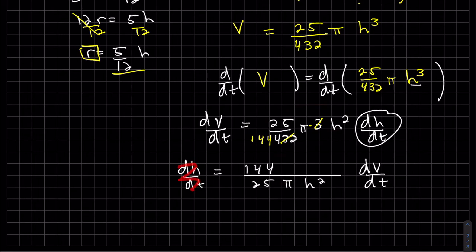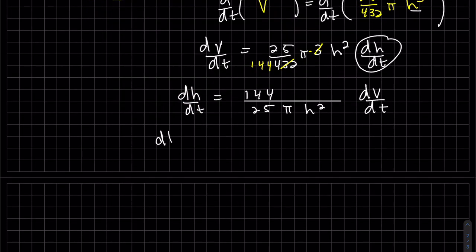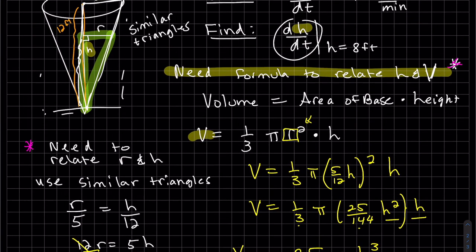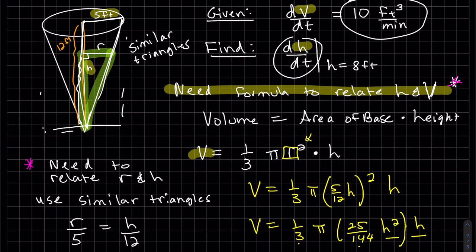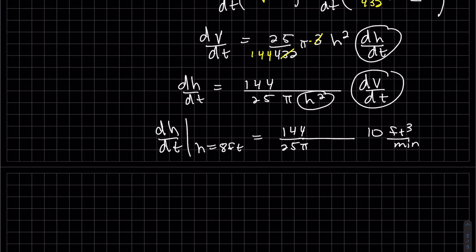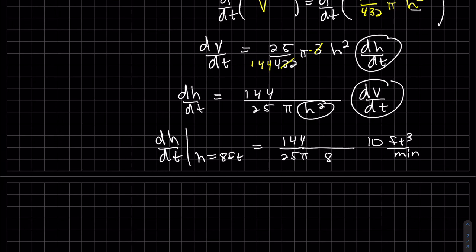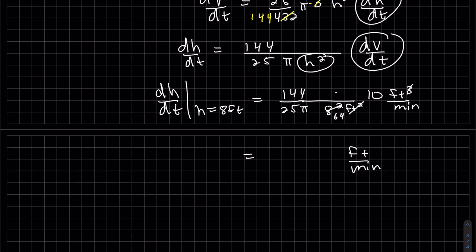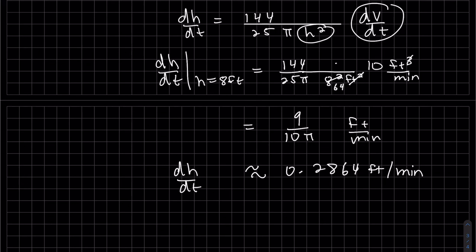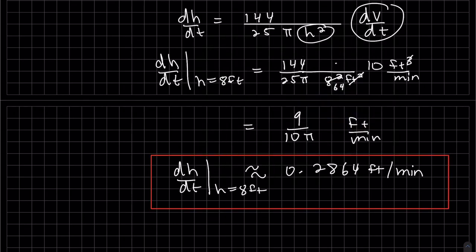Now plug in at the instant when h = 8 feet: dV/dt = 10 feet cubed per minute, and h² = 64 feet squared. The feet squared cancels, leaving units of feet per minute. Use a calculator carefully, dividing each factor separately, to get the final approximate answer — and that's it for today, have a good day.